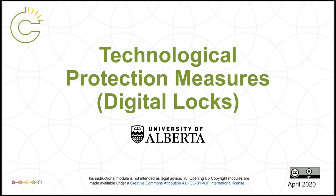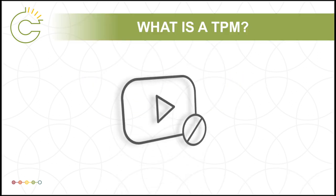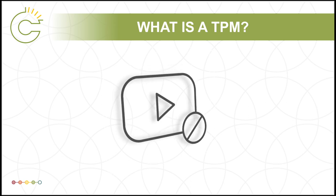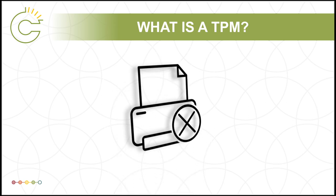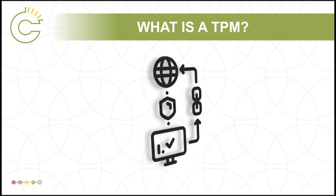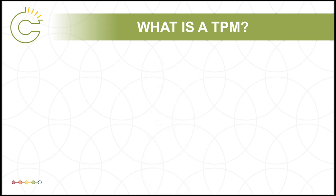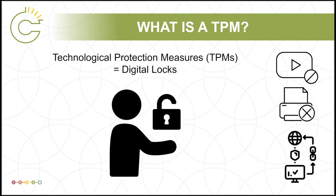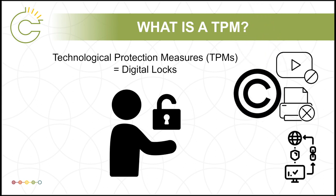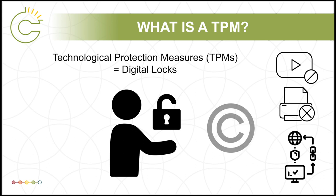Hello and welcome to the University of Alberta's Opening Up Copyright Instructional Module on Technological Protection Measures, or Digital Locks. Have you ever found a YouTube video that's not available for viewing in your region, viewed an electronic document that doesn't allow you to print pages, or used a piece of software that requires you to be online so your license can be validated? These are just a few examples of what are called Technological Protection Measures, or TPMs, also known as Digital Locks, which are designed to restrict access to or copying of copyright-protected content.